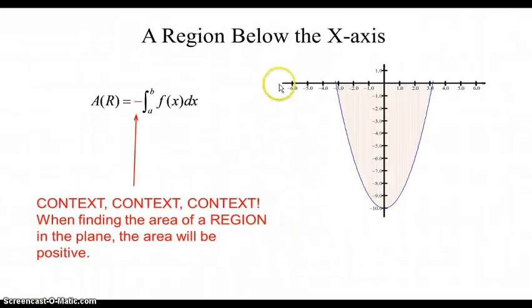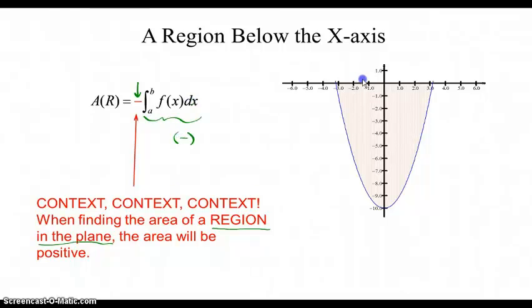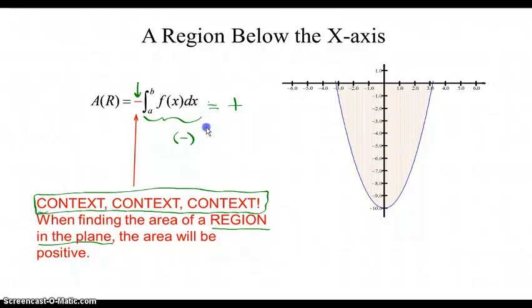What we're going to explore now is what's called a plane region — an area of a plane region. When talking about a region in the plane, what we have normally counted as negative area, we're going to have to put a negative sign in front of that definite integral to get a positive area. This is where context is important: when do we count negative area as negative versus positive? A plane region is a big clue that we count all area as positive.